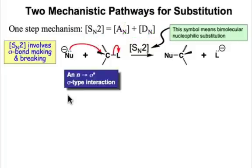We can describe the molecular orbitals associated with the SN2 elementary step as an n to sigma star sigma type interaction, which we can see from these curved arrows. The non-bonding lone pair of electrons on the nucleophile engage in the empty sigma star orbital associated with the carbon to leaving group bond.